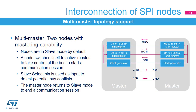SPI networks can operate in a multi-master environment. This mode is used to connect two master nodes exclusively. When either node is not active, they are by default in slave mode. When one node wants to take control of the bus, it switches itself into master mode and asserts the slave select signal on the other node through a GPIO pin. Both slave select NSS pins work as a hardware input to detect potential bus collisions between nodes, as only one can master the SPI bus at a single time. After the session is done, the active master node releases the slave select signal and returns back to passive slave mode, waiting for the next session's start.